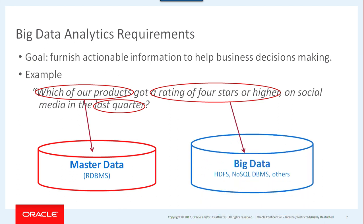But you also need big data — you need the tweets and things from social media — because the question is: which product got a rating of four or higher on social media in the last quarter? So you need both data. How do you reconcile data stored in those different places?